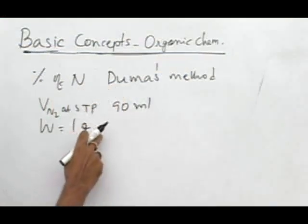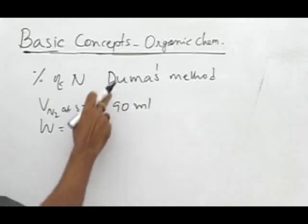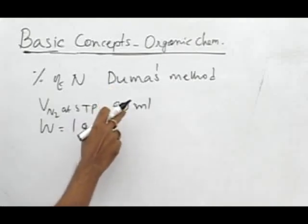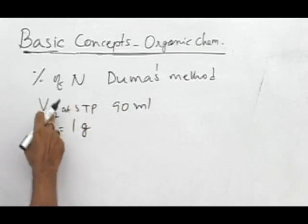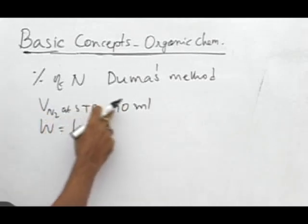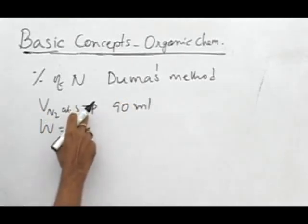One gram of organic compound was taken for analysis, and the Dumas method was used. The volume of nitrogen is 90 ml at STP.